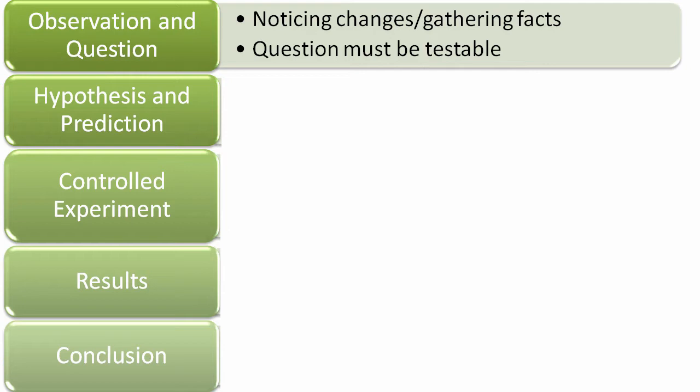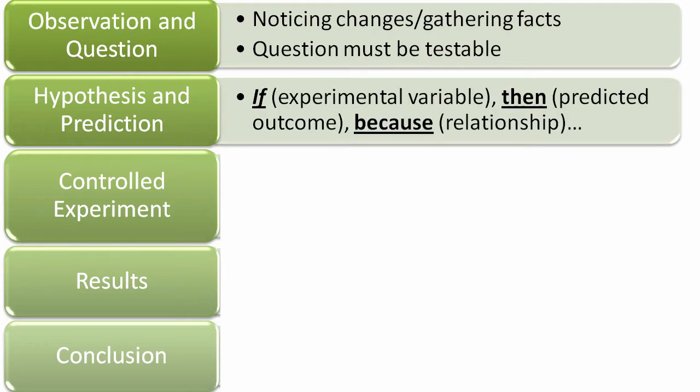The second part is a hypothesis or prediction. This is a potential answer that we are going to test to see if it does, in fact, answer our original question. We write this as an if-then-because statement, often called a conditional statement. If whatever idea we have is related to the question, then we should be able to predict some kind of outcome, because there's a relationship between those two ideas.